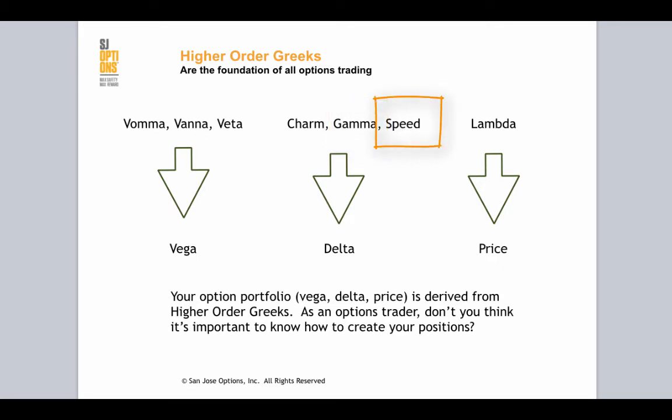And then your Speed — again — this is going to dictate how consistent and steady your Gamma remains, so it's an even higher order Greek. They trickle down, they filter down to calculate the output of your delta.